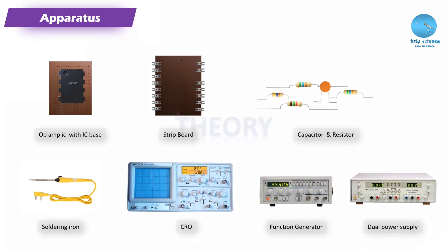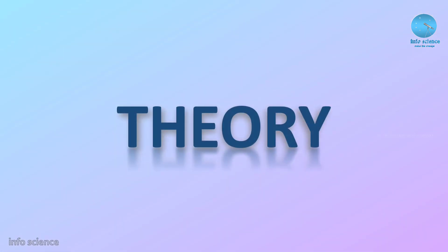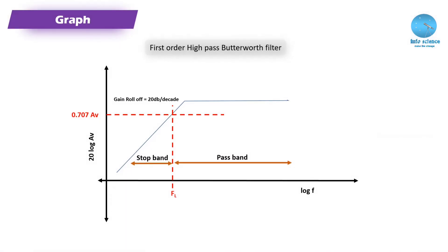We are moving to the theory of this experiment. The first order high pass filter is represented graphically. FLN is the lower cut frequency. Signals below the lower cut frequency will be blocked, and signals above will be bypassed. The region above the lower cut frequency is the pass band region. This is the main concept of the high pass filter.